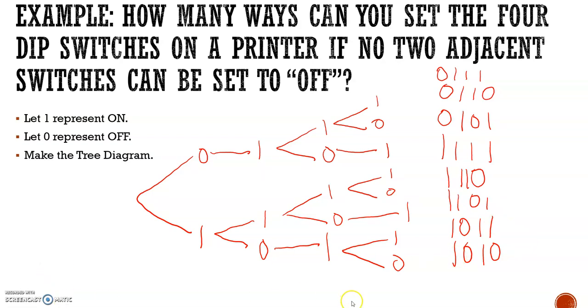That's section 10.1, counting by systematic listing.